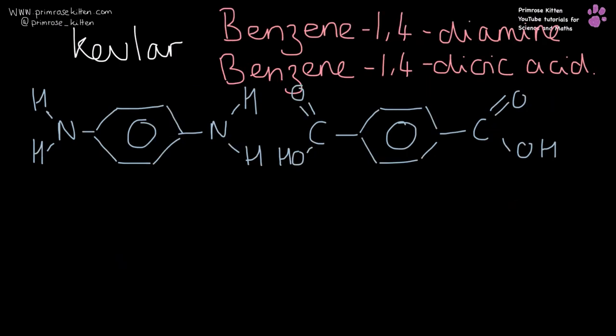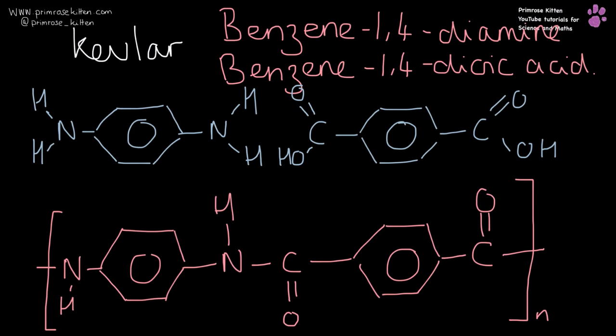Kevlar, now this is one that has benzene groups in it, but you can see we still have the amine groups and we still have the carboxylic acid groups. When we form a polymer from this, you can see we have our amide group in the middle here and then our carbon double bonded oxygen here and our nitrogen bonded to the hydrogen down here. The tricky part in these questions is making sure that you draw the repeating unit correctly or identifying the correct repeating unit.